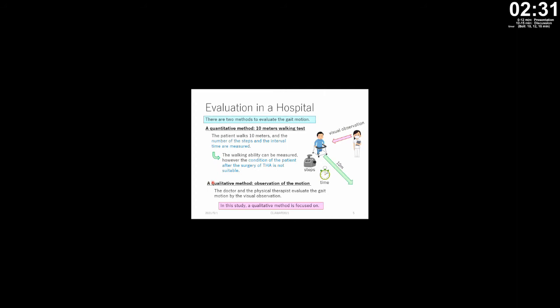I will show the evaluation methods used in the hospital. There are two methods to evaluate the gait motion. One is the quantitative method — effectiveness is often measured by a 10-meter walking test, where the number of steps and the interval time are measured. Walking ability can be measured, however the condition of the patient is not fully captured. The other is the qualitative method, evaluated by observation of the motion. In this study, we focus on the qualitative method.